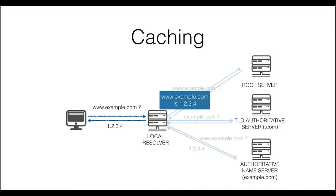However, caches are subject to aging, meaning that an entry, even when it is frequently requested, cannot reside in cache forever. Otherwise, the local resolver might miss updates to the record. DNS avoids aging by using a time-to-live field, or TTL, which gives an upper bound to the validity of a cache record. Once the TTL is expired, the resolution process needs to be repeated.